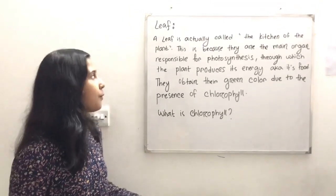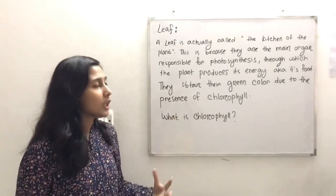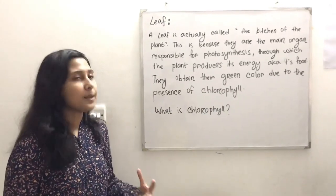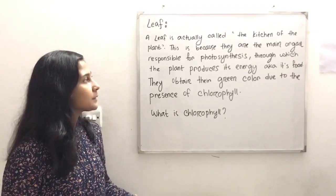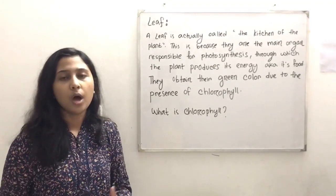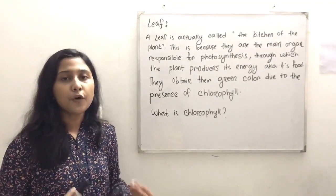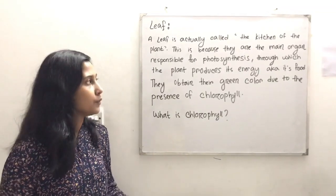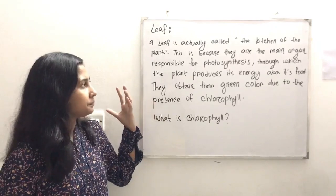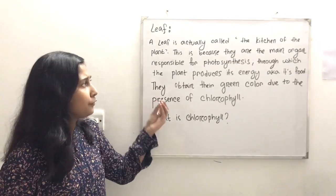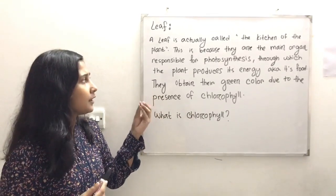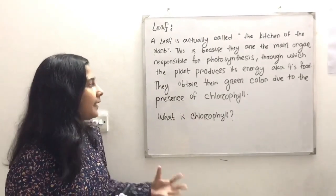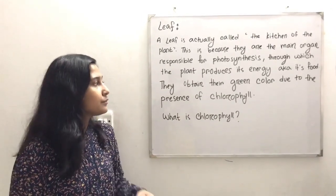A leaf is actually called the kitchen of the plant, because leaves are the main organ responsible for photosynthesis. Photosynthesis is the process through which plants make their food. Through photosynthesis, the plant produces its energy, also known as food.